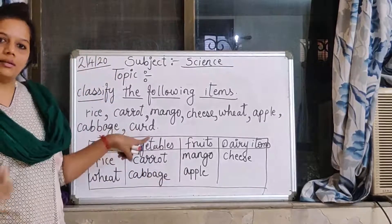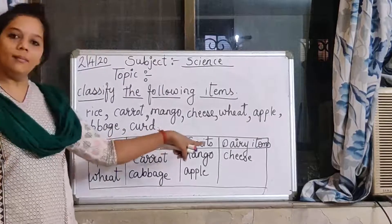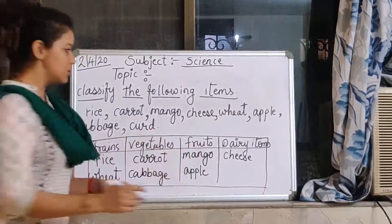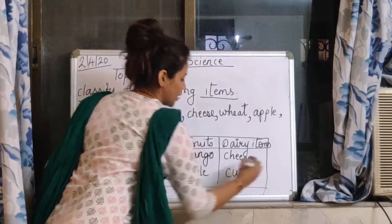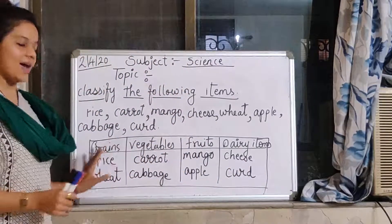And the last is curd. Curd is made from dairy products, milk. So curd will come in dairy items. Now this we have classified.